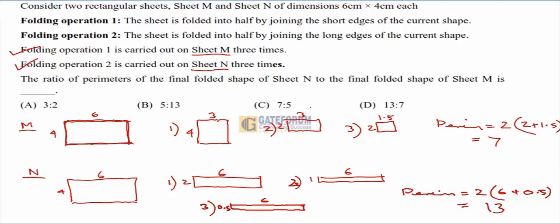They have asked the ratio of the perimeters — first N and then M — so the ratio is 13:7, and this is the correct option.